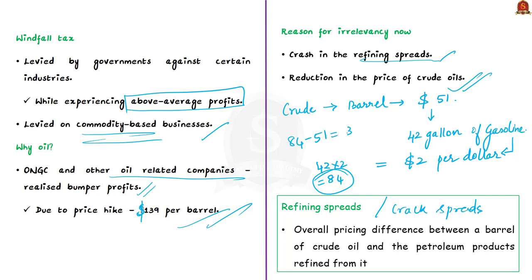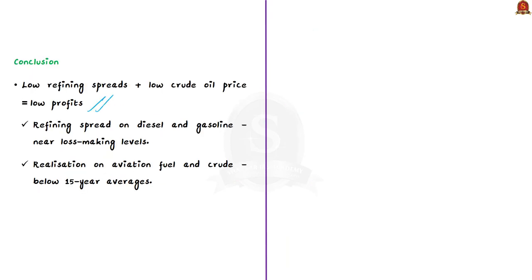However, the article argues the windfall tax is now questionable because refining spreads have recently crashed and crude oil prices have also declined. The realized refining spread on diesel and gasoline has fallen to near loss-making levels, and realization on ATF and crude oil went below 15-year averages. The tax is due this week and it remains to be seen whether it will be continued.